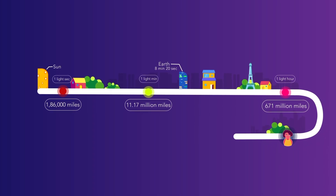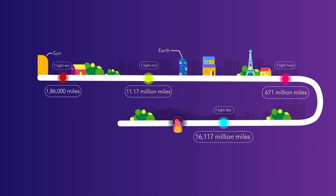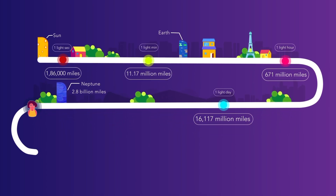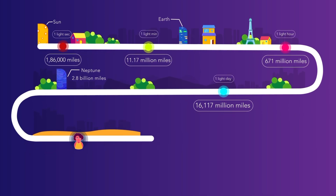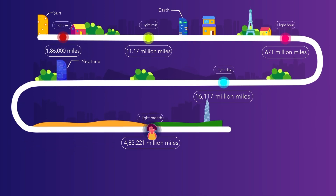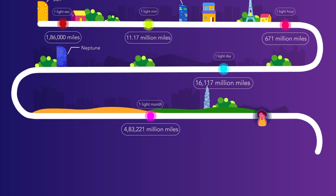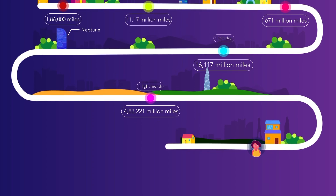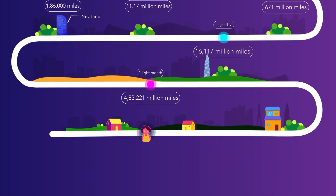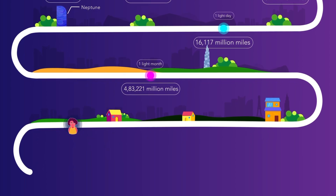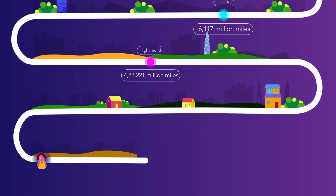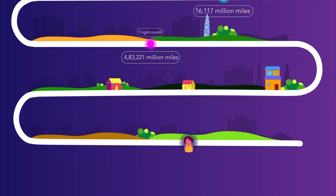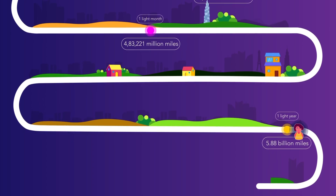The distance covered by light in 1 day is called a light day. The distance covered in a month is called a light month. And the distance covered by light in 1 year is a light year.